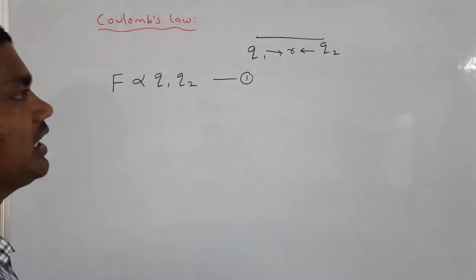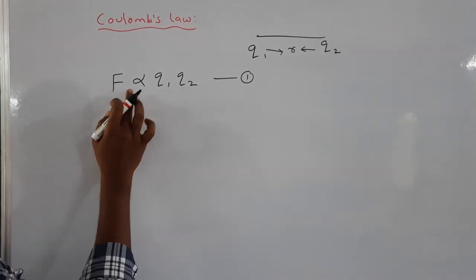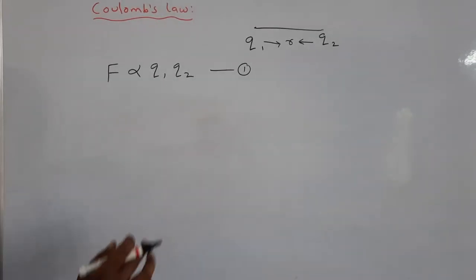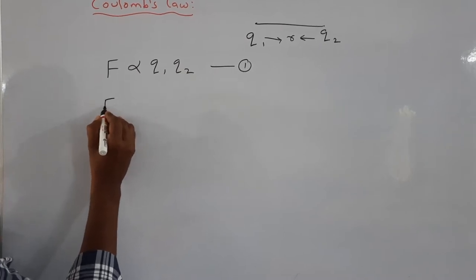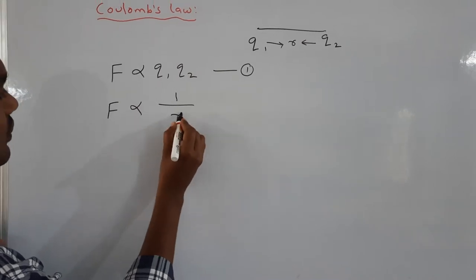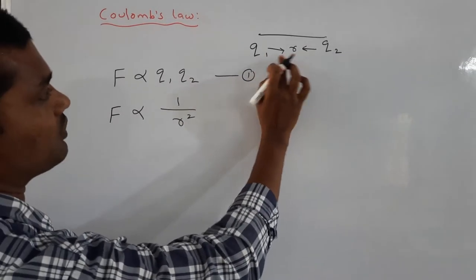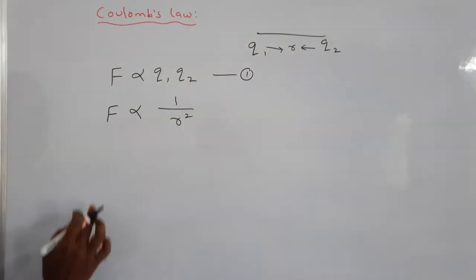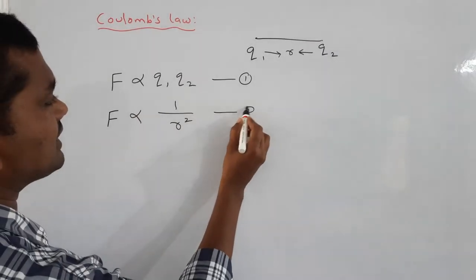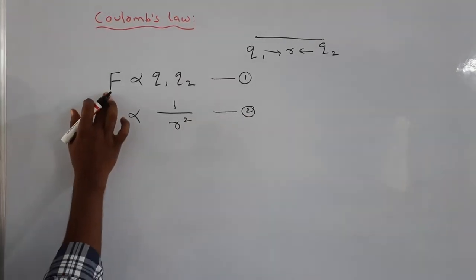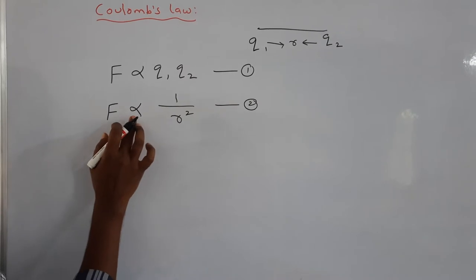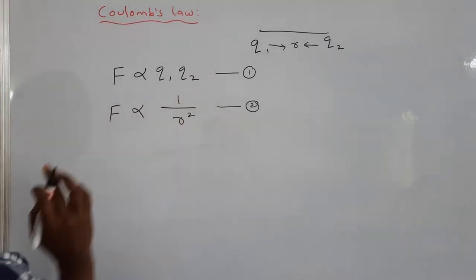The electrostatic force is directly proportional to the product of the two different charges. Next, we can write that the electrostatic force is inversely proportional to the square of the distance between the two charges. So F is proportional to 1 by r squared. This is equation number 2.